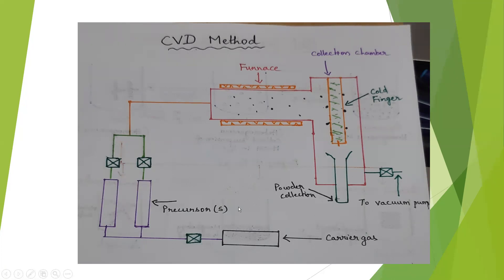So how this process takes place: the first step is that the carrier gas is bubbled through the precursor, and these precursors are always maintained in vapor phase. There are two precursors, and this is actually the advantage or salient feature of CVD — by using CVD, we can prepare doped nanomaterials and also coated nanomaterials.